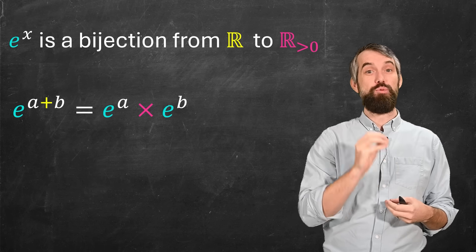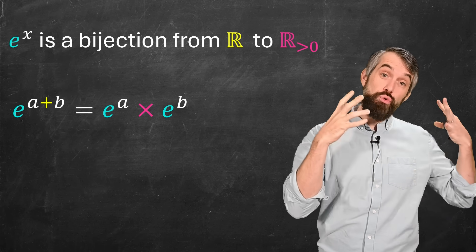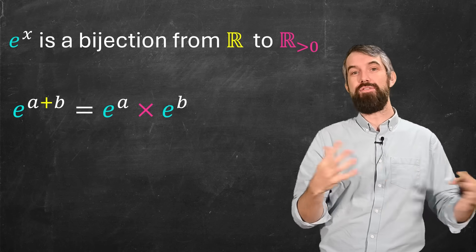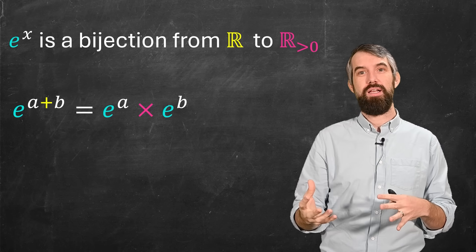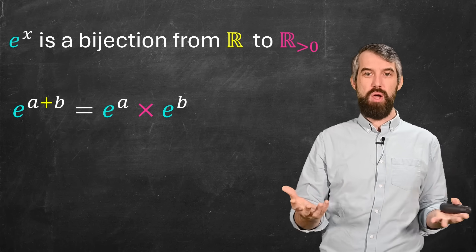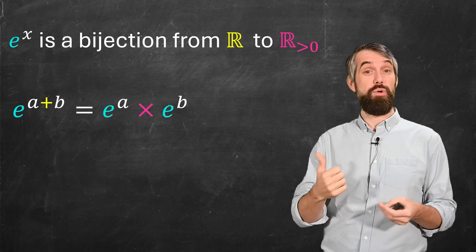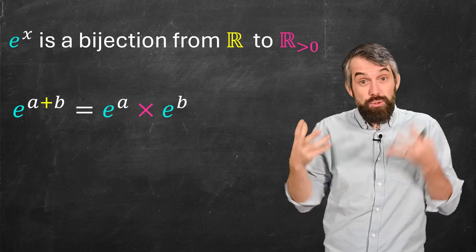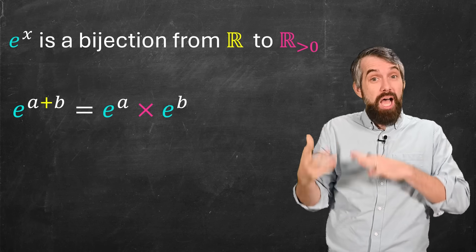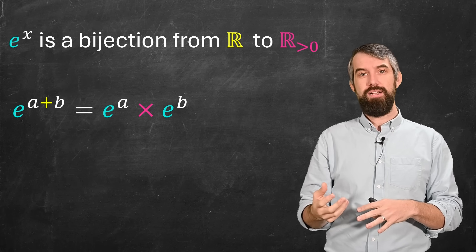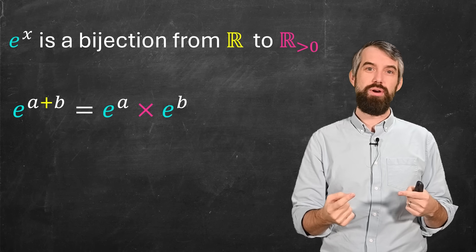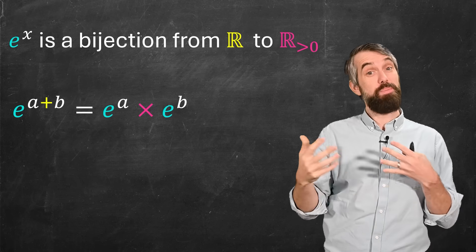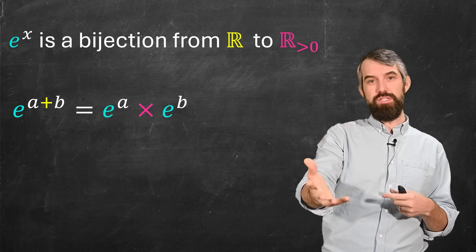It's a bijection that respects the structure, the addition and multiplication we have on each of these two different sets. In particular, remember the exponential rule that e to the sum, like e to the (a plus b), is the product of the exponentials, e to the a times e to the b. So somehow this exponential is turning the additive structure on R into the multiplicative structure on the positive reals.